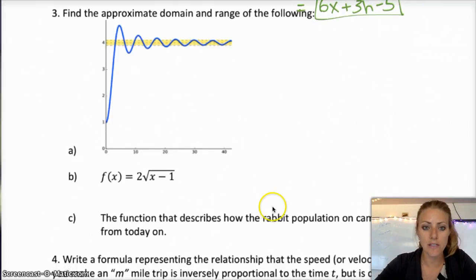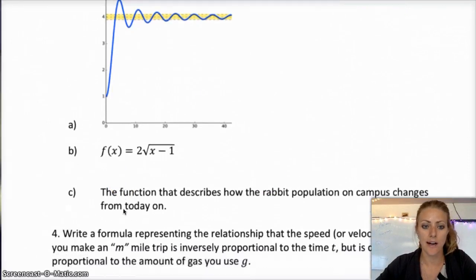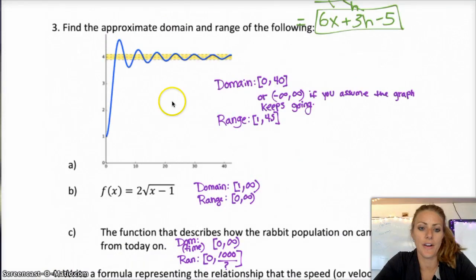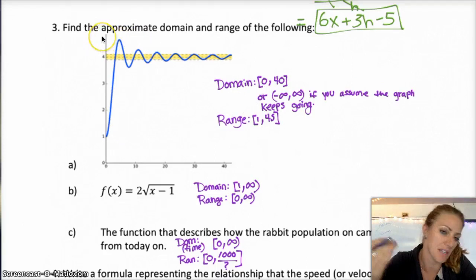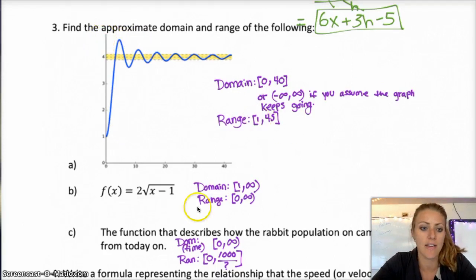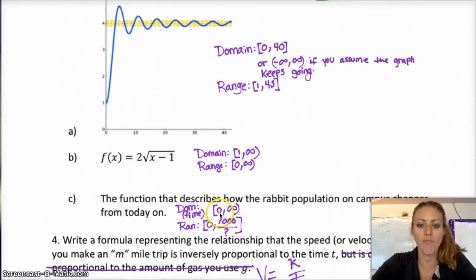And then we just have a couple more examples here. So go ahead, try those. Find the domain and range. And then see if you can do number 4 as well. So here are your answers. Domain for A is about from 1 to 40, or if you assume that it keeps going, then it would be negative infinity to positive infinity, depending on what you assumed about the function. And I figured the range was about from 1 to 4.5. Maybe you guessed that was about 5. That's fine. Then your range would be 1 to 5. B, the domain is 1 to infinity. Range is 0 to infinity.